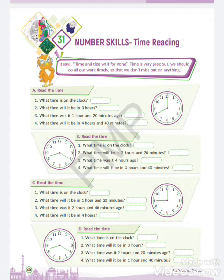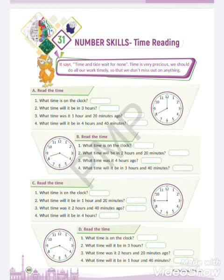Come to part D. What time is on the clock? It is 8:20 again. What time will it be in the next 3 hours? 8:20 plus 3 hours — it will be 11:20. Then what time was it 2 hours and 20 minutes ago? We have to subtract. So we subtract 2 hours and 20 minutes: 20 minutes directly, and from 8 back to 6.